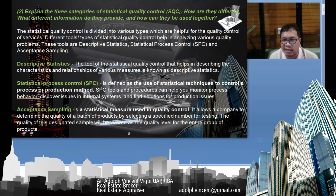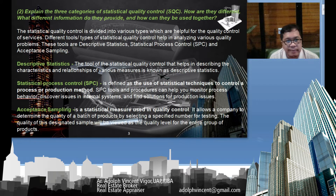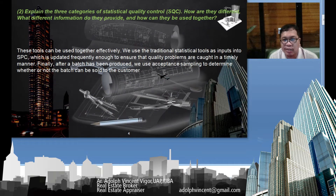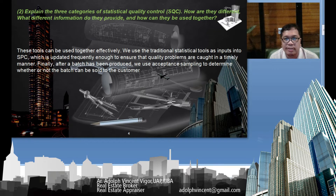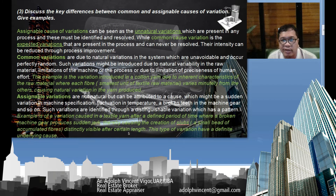The three categories are descriptive statistics, statistical process control (SPC), and acceptance sampling. These tools can be used together — we use descriptive statistical tools as inputs into SPC, which is frequently updated to ensure problems are caught in a timely manner.